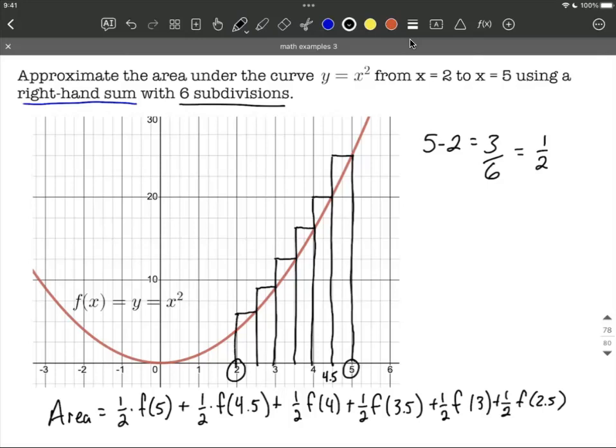Now you may notice that we did not plug in two, because if we were to plug in two it would be going up here to the left, and that takes us outside of the range that we're looking for between two and five. So we're not going to make this extra box at the very end here because it takes us outside of the between two and five for our x values and our right hand sums. Now two would be used if we were doing left hand sums.